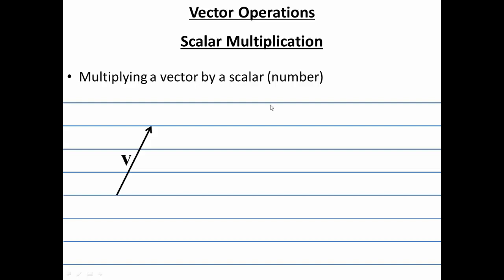Alright, let's start talking about vector operations. One of the simpler vector operations is called scalar multiplication. It simply involves multiplying a vector by a scalar.